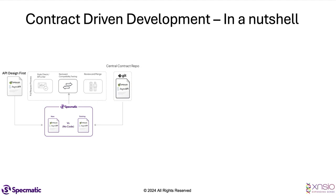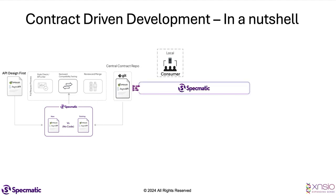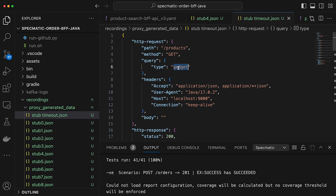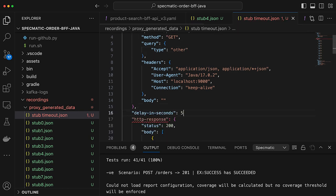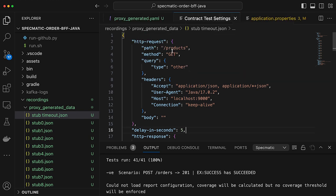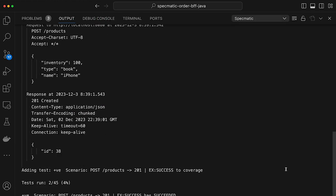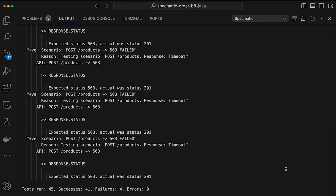Once backward compatibility is established, there would be a review process and then the changes get merged into the Git repo. Once the changes are in the repo, the consumer team can get started on their work. They don't need to wait for the provider to be available — they can refer to the central contract repo and use the specification as a wire-compatible stub powered by Specmatic. They can do their development and testing completely locally, including fault injection and scenarios like empty state and error state to make sure their consumer code is resilient.